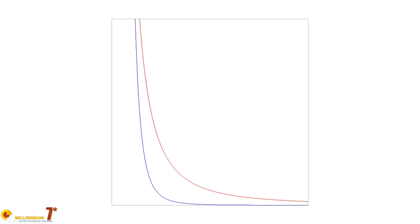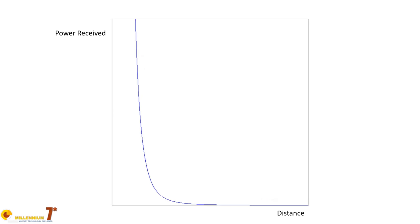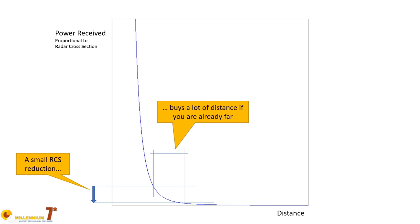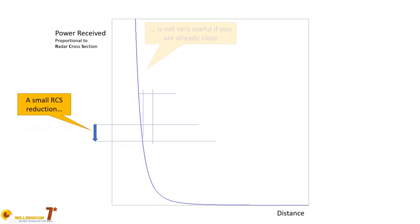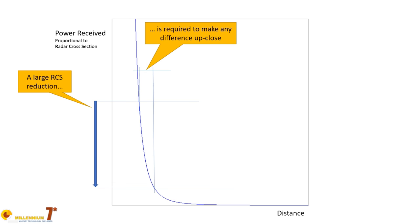According to the radar equation, the power received is inversely proportional to the fourth power of the distance between the emitter and the target, and directly proportional to the radar cross-section. The radar cross-section is a measure of how good or bad an aircraft is at reflecting radar energy — it is a property of the object itself. The lower the radar cross-section, the lower the energy reflected toward the emitter. If the probability of detection decreases with the fourth power of the distance, even a small reduction in radar cross-section will do wonders at long distance.